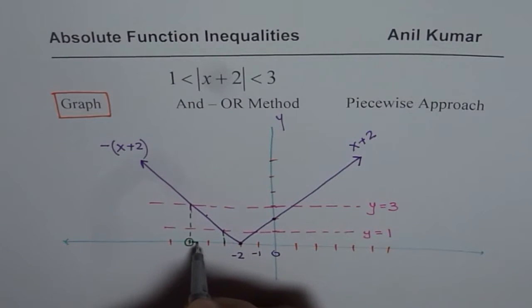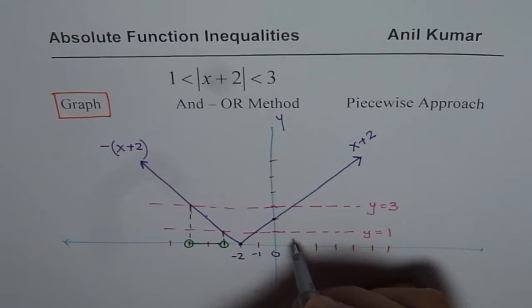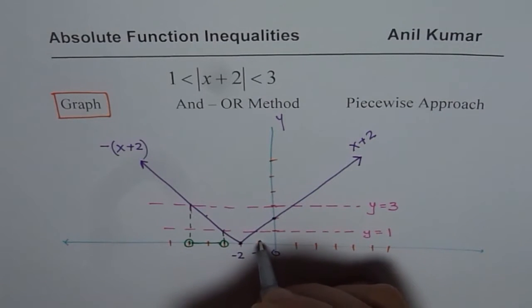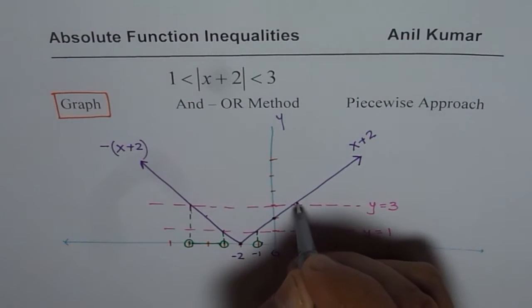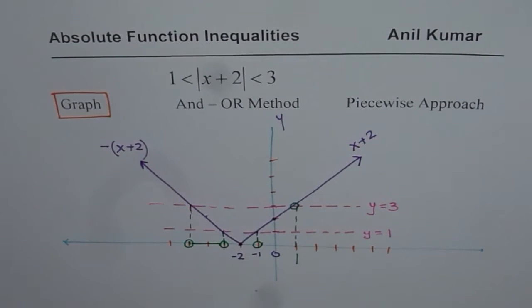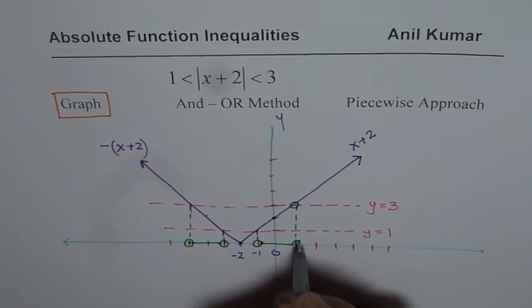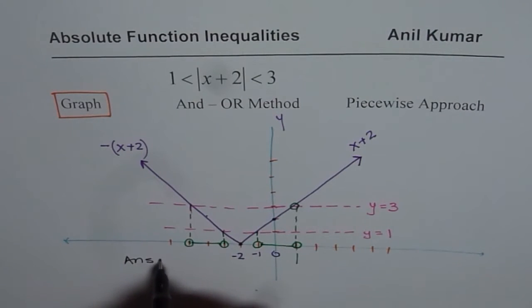It means this interval. That means from here to here. Not including those points since it is not equal to. It is less than or greater than. And on this side, we have from here, minus 1, to this point, which is plus 1. So that gives us this solution using a graph. So from the graph, we know the answer is between...